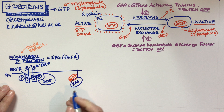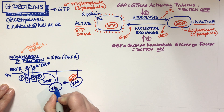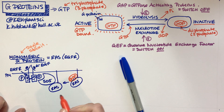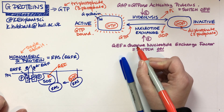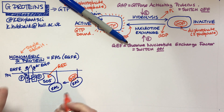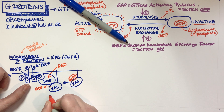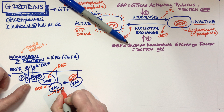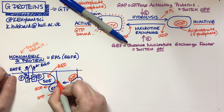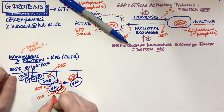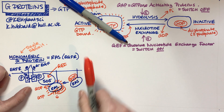When SOS is in the system, it is able to activate RAS because SOS is a GEF — a guanine nucleotide exchange factor. SOS activates RAS by getting RAS to get rid of that old GDP and bind a new molecule of GTP, taken fresh from the cytosol. So RAS is now active because it was activated by SOS acting as a GEF, and it can go on to activate other proteins.